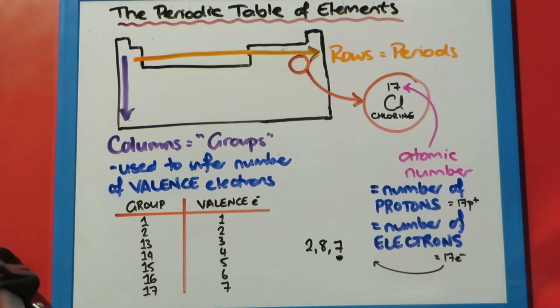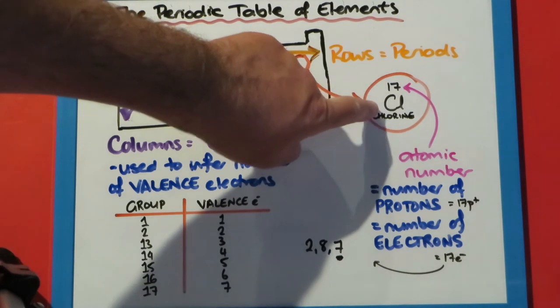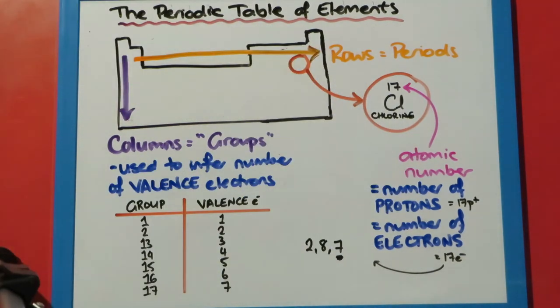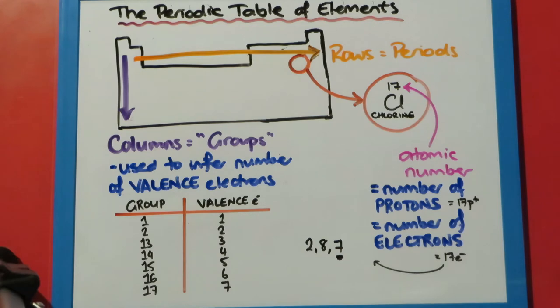When we look at a periodic table in more detail, we see that each element has got a symbol, its name, and a number. This number is called the atomic number. Now you might see another number that's called the mass number, and we'll explore that more later.